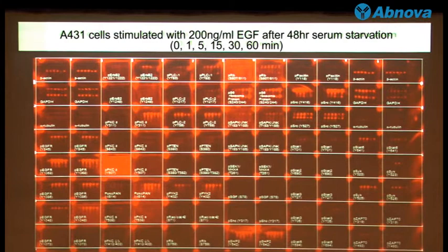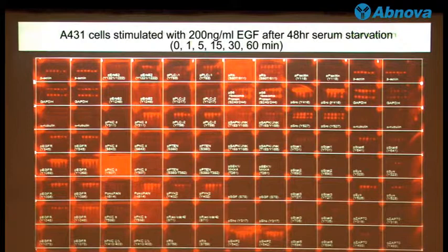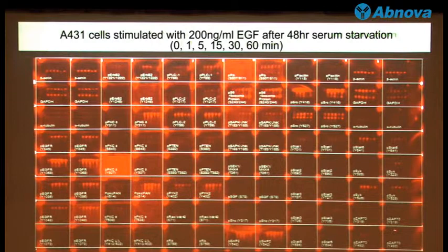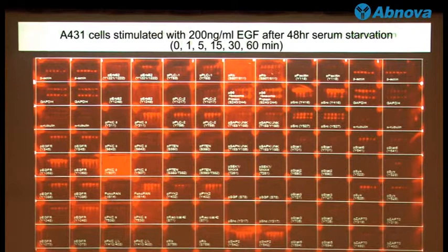And this is one of the actual images of the A431 skin cancer cell stimulated with 200 nanograms per ml of EGF for 6 time points. You can see different antibodies loaded in each well. We do a duplicate, so same antibodies beside each other.